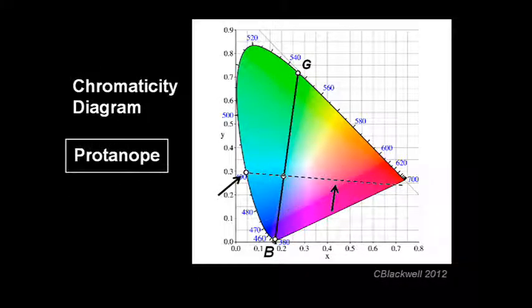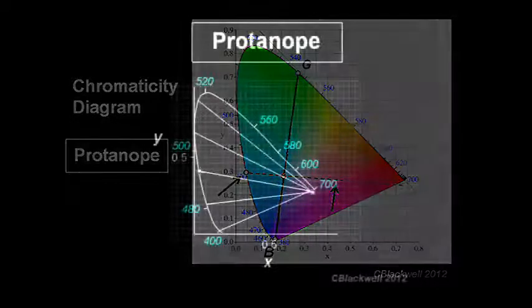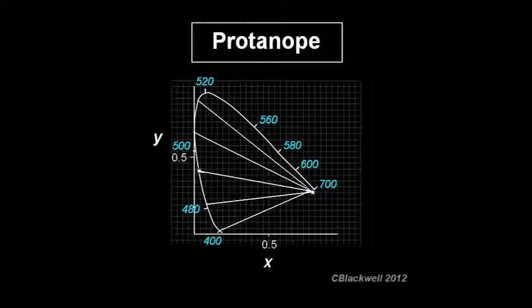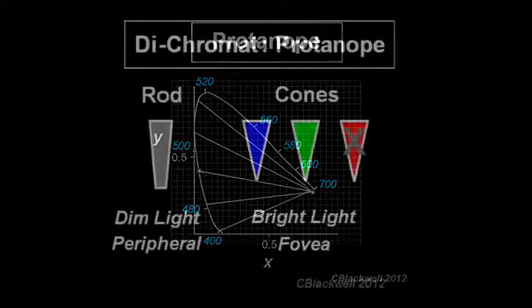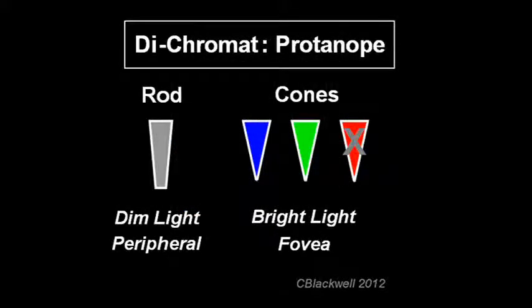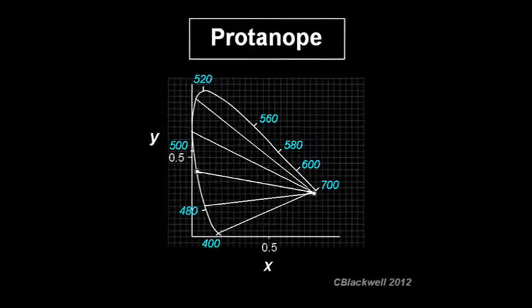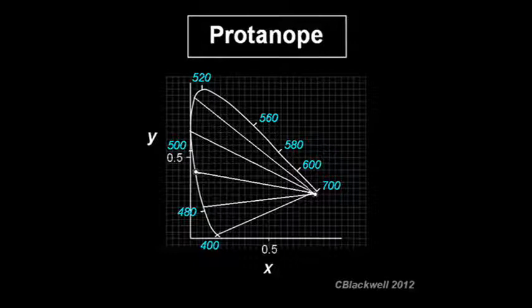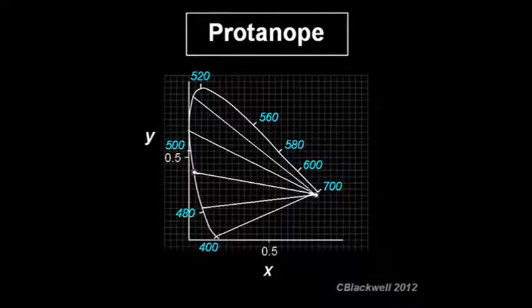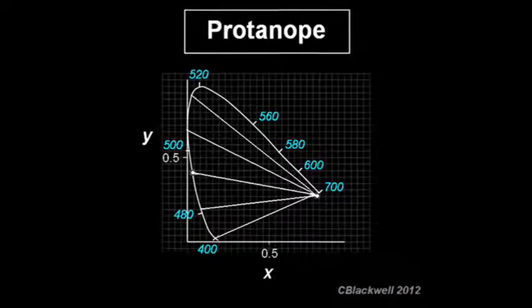Likewise, we can use this tool to learn useful things about color deficiency. In books that go into detail about color blindness, you will see a version of the chromaticity diagram that looks like this. A protonope is a person who is colorblind because they are missing the red pigment. Because of that, they are unable to tell apart colors that fall along each of the straight lines in the diagram. Therefore, these lines are called confusion lines.